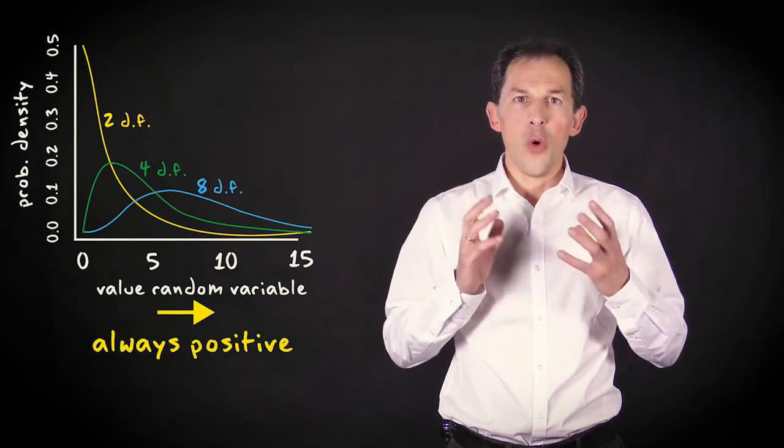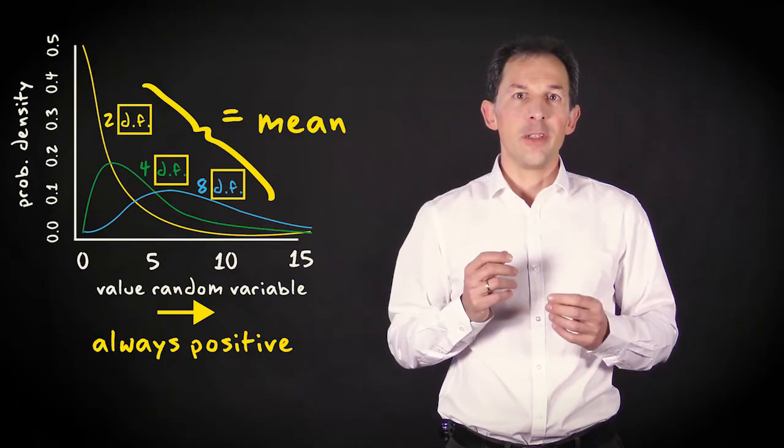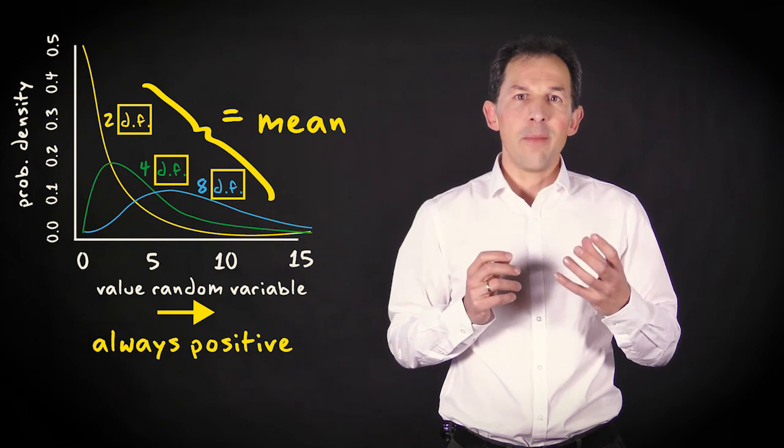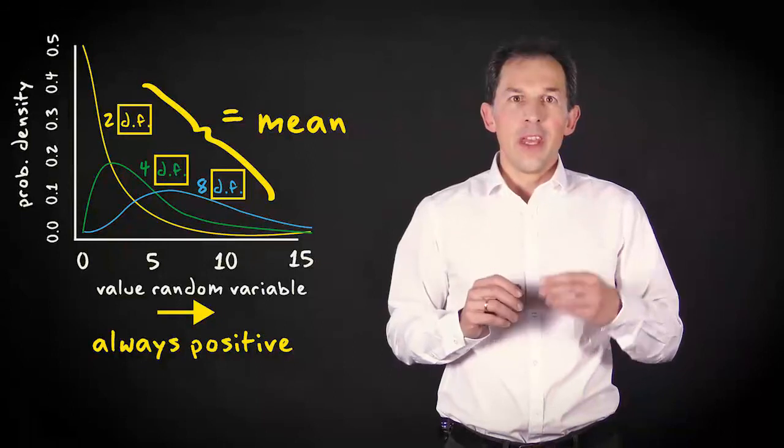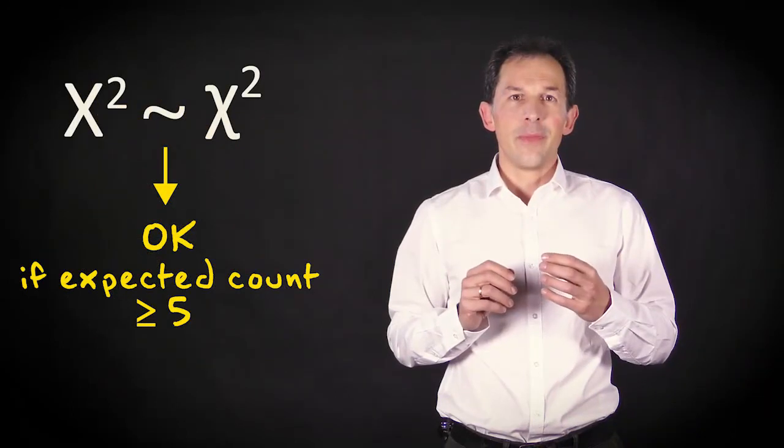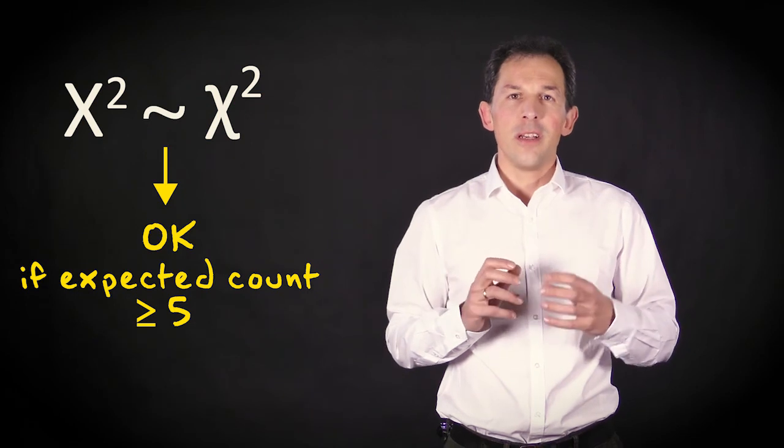The chi-squared distribution is always positive and the degrees of freedom parameter represents the mean of the distribution. The sampling distribution of the chi-squared statistic gets closer to the chi-squared distribution if the sample size increases. And the approximation is good when each expected cell count is at least 5.